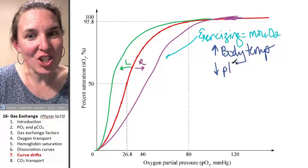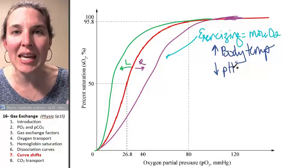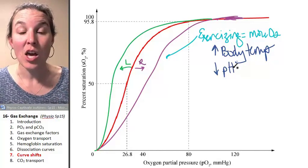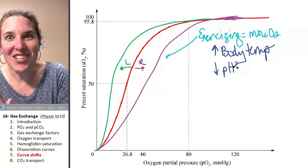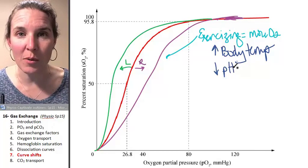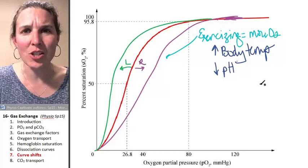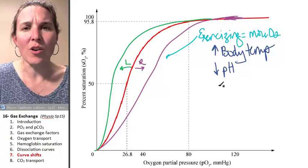Decreased pH. If your pH drops, if you become acidotic, oxygen is going to fall off your hemoglobin molecules easier. How would you get low pH? How would you get your pH to drop?